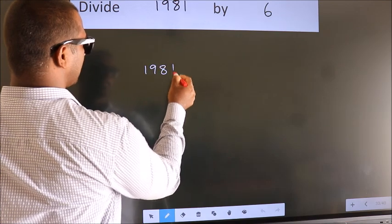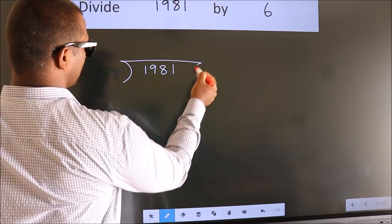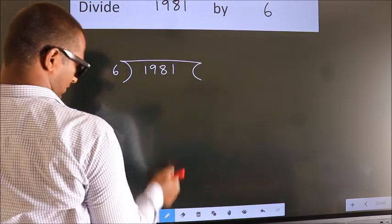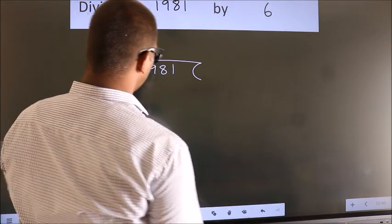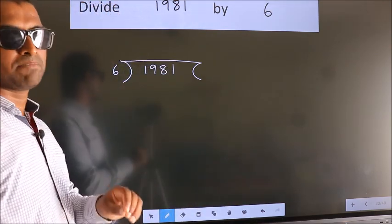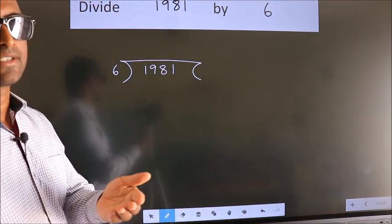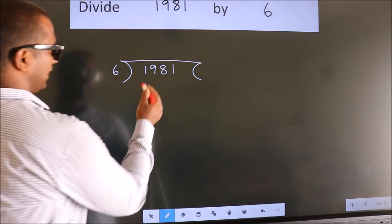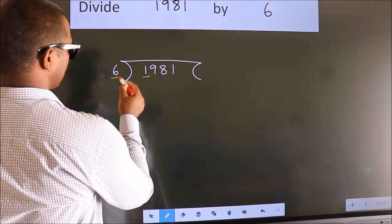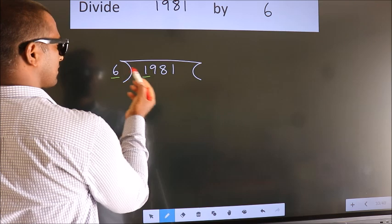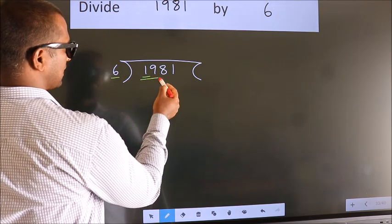1, 9, 8, 1 here. 6 here. This is your step 1. Next, here we have 1. Here 6. 1 smaller than 6, so we should take 2 numbers.